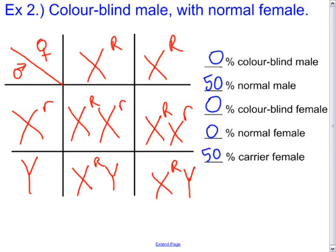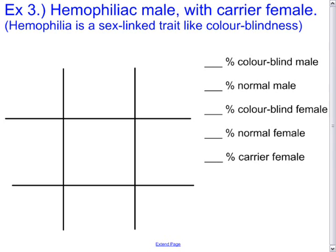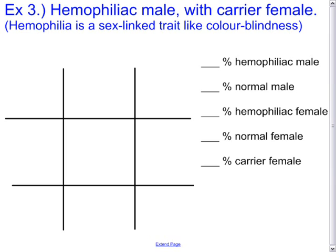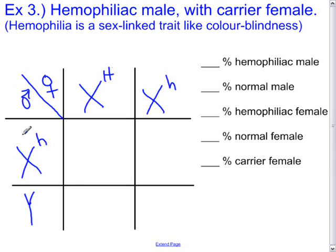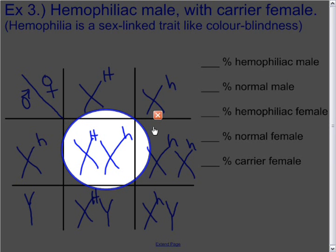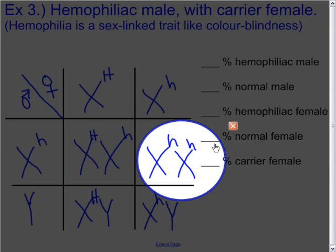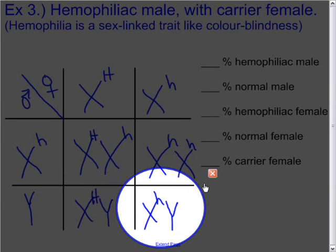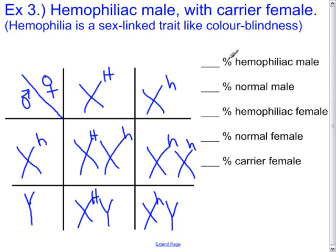Let's try one more example: a hemophiliac male with a carrier female. Hemophilia is also a sex-linked trait like colorblindness, also carried on the X chromosome. Use H as the letter to designate hemophilia. The Punnett square is set up with the carrier female and the hemophiliac male. The possible offspring are: a carrier female, a hemophiliac female, a normal male, and a hemophiliac male.